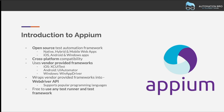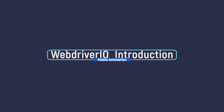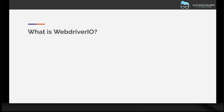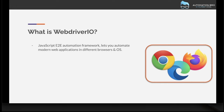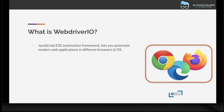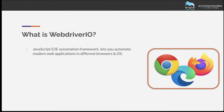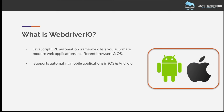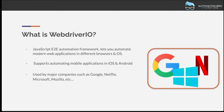In this video we'll do a quick overview of WebdriverIO — what it is and why it's so popular. WebdriverIO is a JavaScript end-to-end automation framework that lets you automate modern web applications across different browsers and operating systems. It supports modern web apps built in React, Angular, Vue, and so on. It also supports automating mobile applications on iOS and Android using Appium. Because of this flexibility, WebdriverIO is used by major companies such as Google, Netflix, Microsoft, and Mozilla.